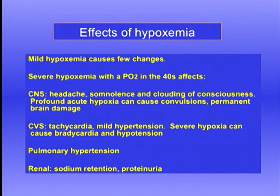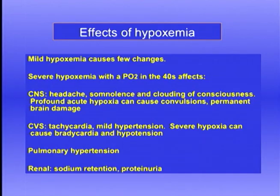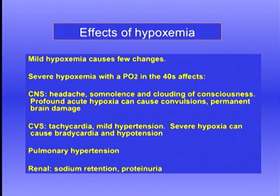With acute severe hypoxia, there may be convulsions and permanent brain damage — for example, someone who falls into a swimming pool, is pulled out ten minutes later, is revived, but the central nervous system never returns to normal. Severe hypoxemia also affects the cardiovascular system: there is tachycardia and mild hypertension, probably caused by increased circulating catecholamines. More severe hypoxia can cause bradycardia and hypotension. If hypoxemia is associated with a low alveolar PO2, you may get hypoxic pulmonary vasoconstriction with pulmonary hypertension. In the renal system, you get sodium retention and proteinuria.